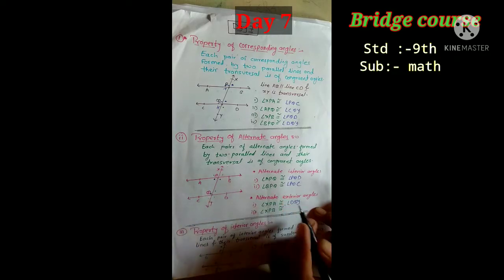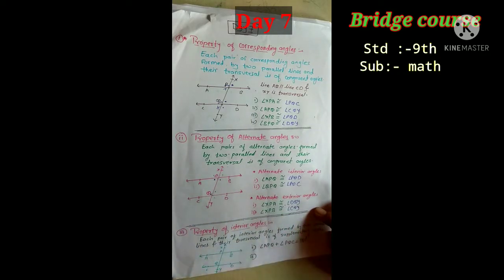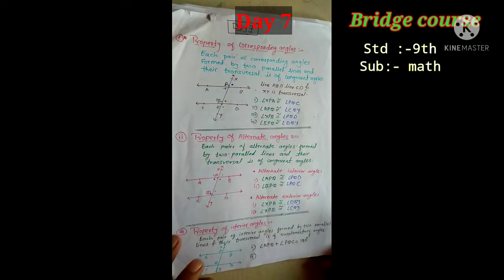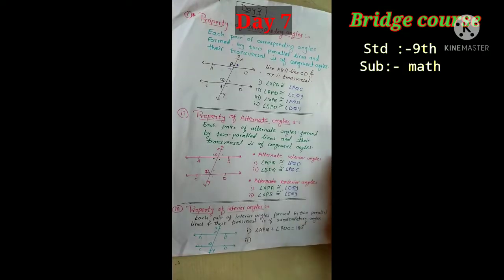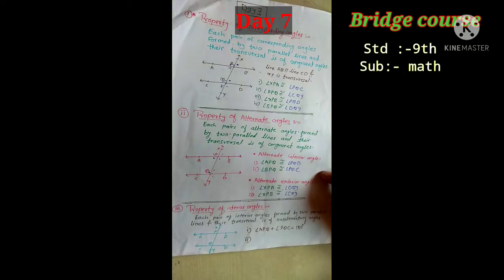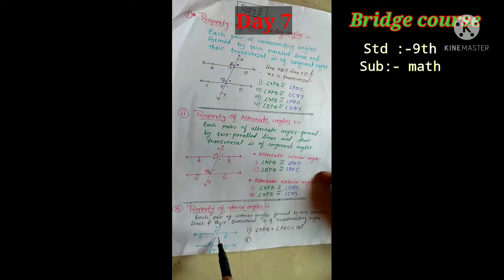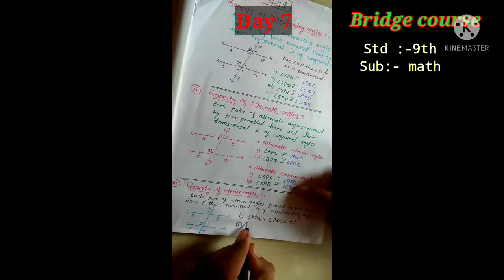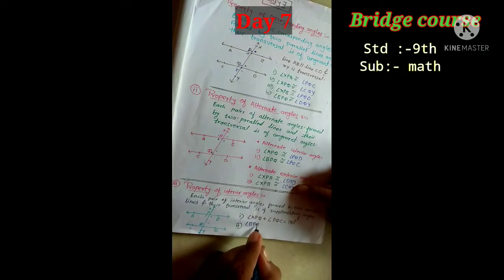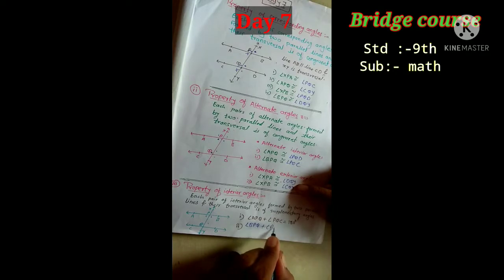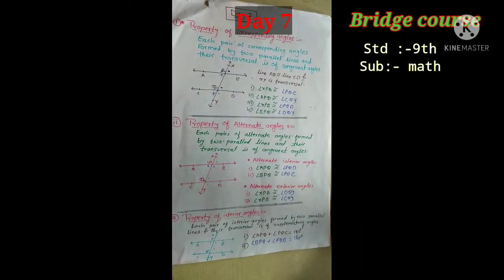HAC exterior alternate angle, angle CQY. Now, properties of interior angles: each pair of interior angles formed by two parallel lines and their transversal is supplementary — supplementary means the angles sum to 180 degrees. First pair: angle APQ plus angle PQC equals 180 degrees. Second pair: angle BPQ plus angle PQD equals 180 degrees.